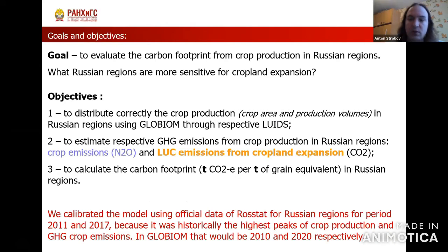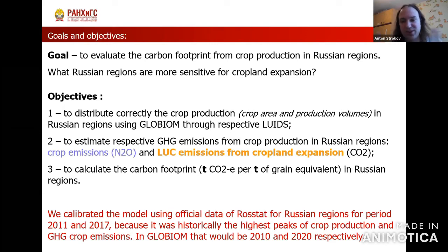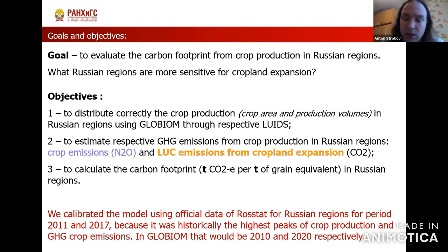We wanted to understand what regions are sensitive to cropland expansion. For this we had three objectives. First, we wanted to put the official data from Rosstat — the Russian statistical agency — into GLOBIOM, covering harvest area and production area for those crops which are in GLOBIOM. Since GLOBIOM consists of squares called LUIDs, we wanted to correctly redistribute the Russian regional production into the proper LUIDs. After that we ran the model to look at what kind of emissions crop production increases produce — it could be crop emissions or land use change emissions. We then created an additional variable dividing crop emissions by production amounts, which we call the grain equivalent.